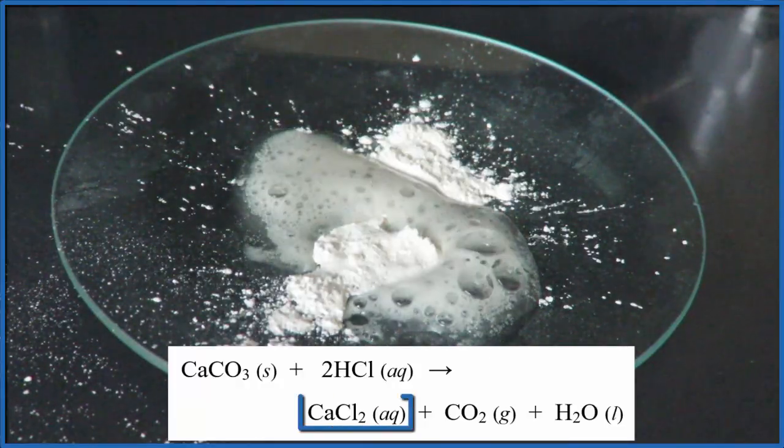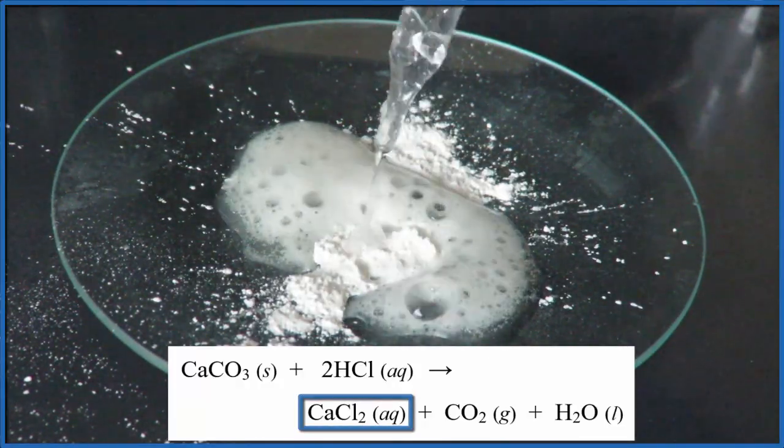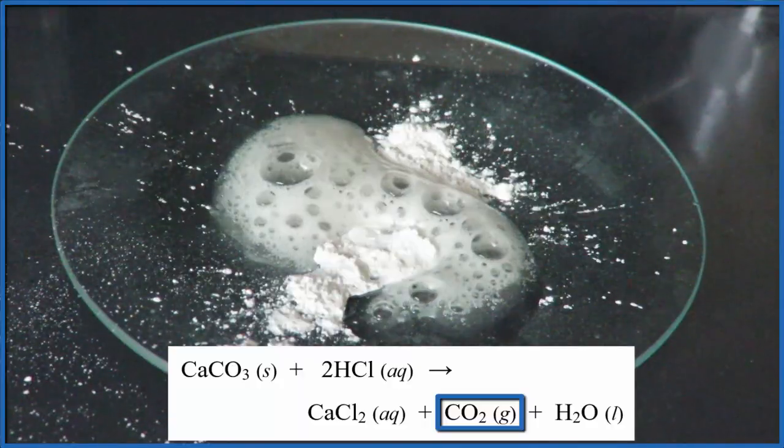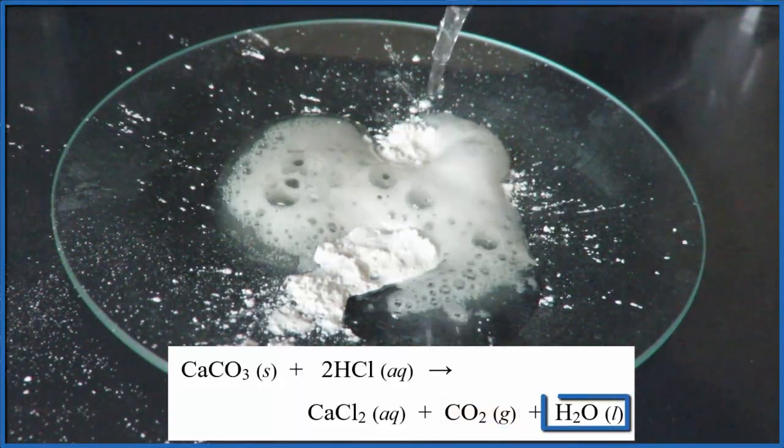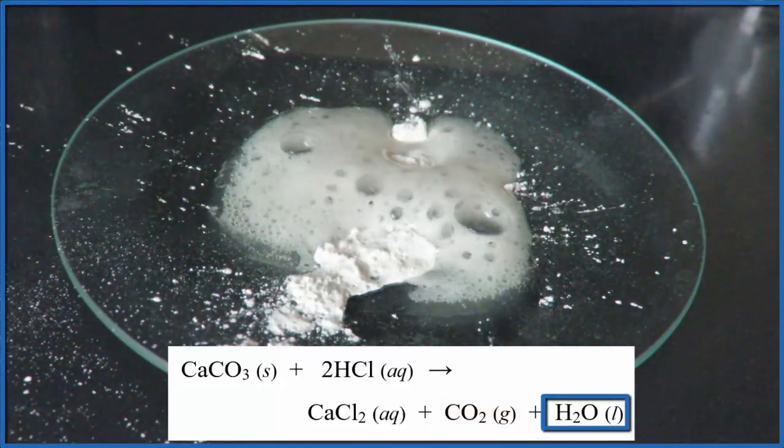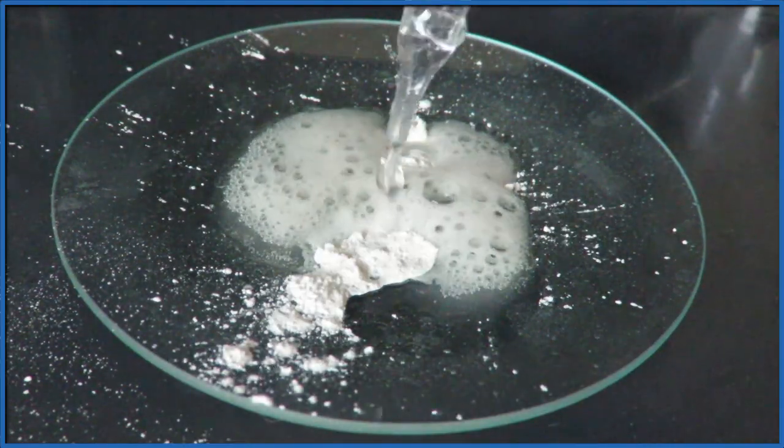We get calcium chloride, that's dissolved in the liquid, and carbon dioxide gas, those are the bubbles you're seeing, and then some water. So this is the equation for the reaction of calcium carbonate with hydrochloric acid.